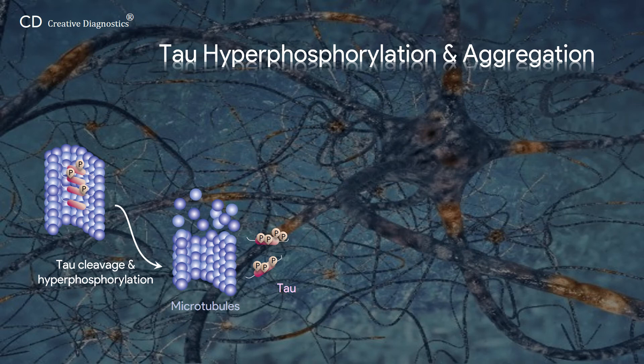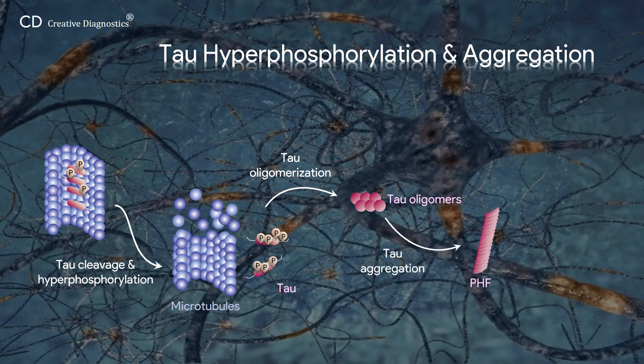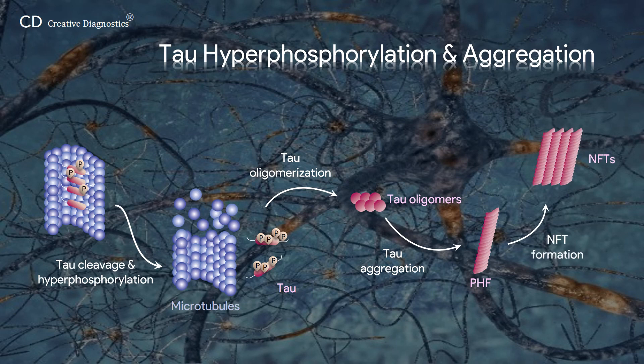Excessively phosphorylated Tau accumulates in the somatodendritic compartment of neurons, forms Tau oligomers, aggregates to make up the paired helical filaments, and eventually develops neurofibrillary tangles.